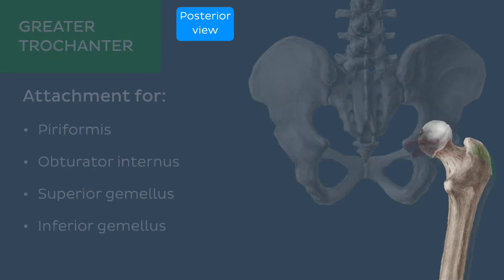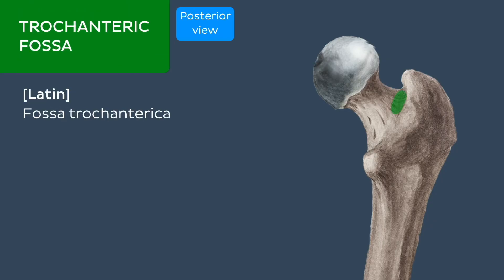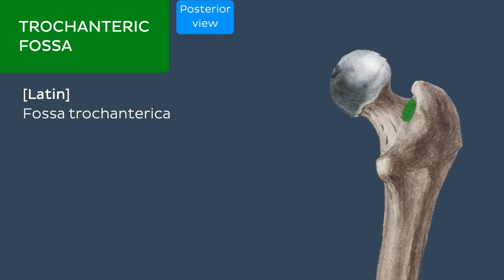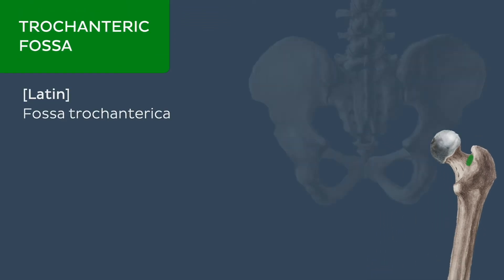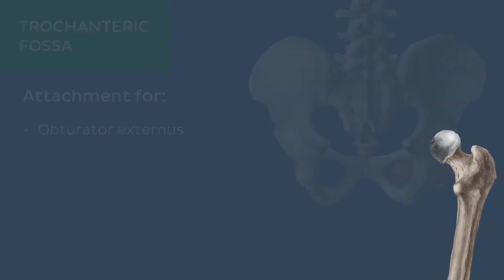The medial surface of the greater trochanter presents with a deep depression known as the trochanteric fossa. The tendon of the obturator externus muscle inserts into this fossa.